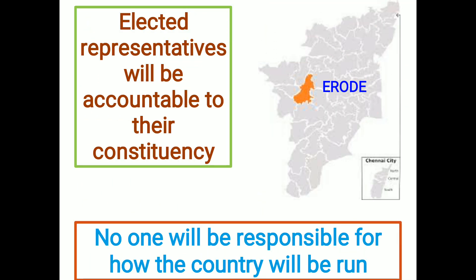Even if a government is formed, the elected representatives will only be accountable to their own constituency. For example, as shown in a picture of a map of Tamil Nadu, a representative of a particular constituency like E-Road is accountable and responsible for issues in that area. But if it is an independent candidate who has formed the government, no one will be responsible for how the country as a whole will be run. That is why we need political parties.